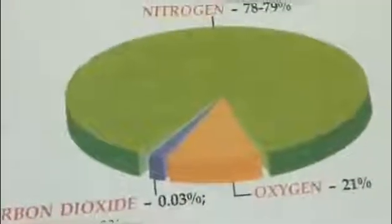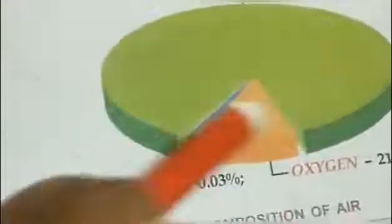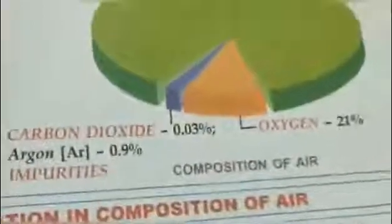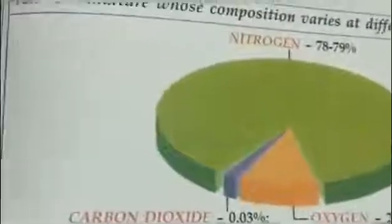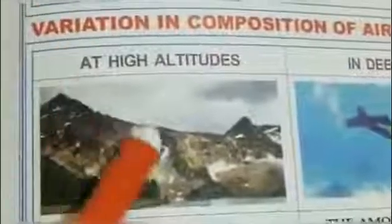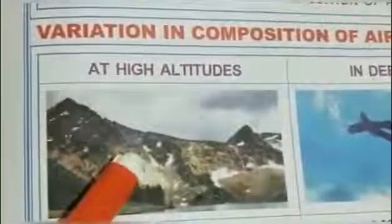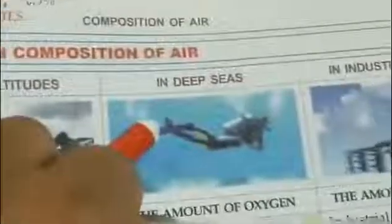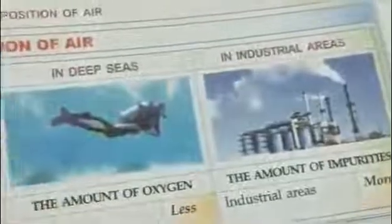Air is actually a mixture of gases. This is the composition of air and you can find variation in composition when you go up in the mountain, at high altitudes, in deep seas, in industrial areas, and in forests.